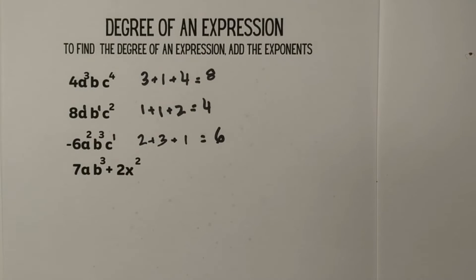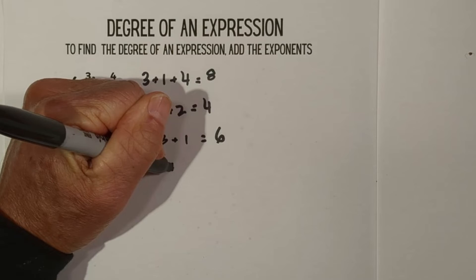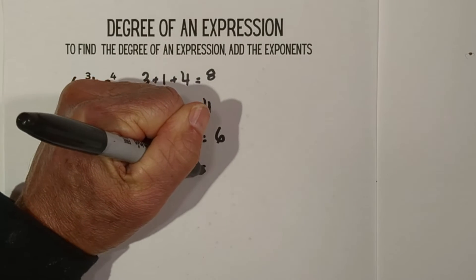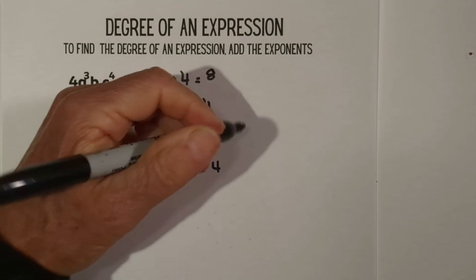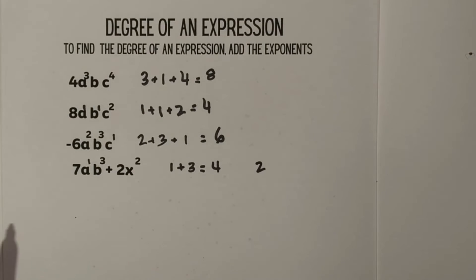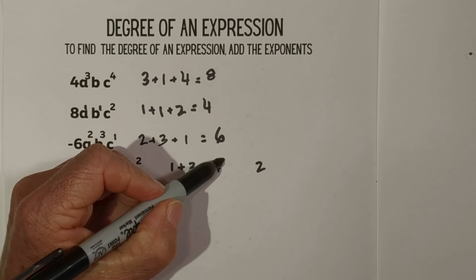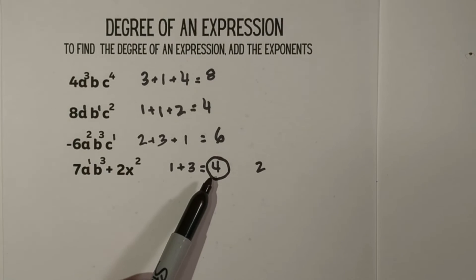And now we have a binomial. So you would think we have a 1 and a 3, so that is 1 + 3, which equals 4. And then we have 2x², which is 2. So you would think, well, I'll just add these together, but you do not. You go with the highest degree of the monomials in this polynomial. So the degree of this expression would be 4.